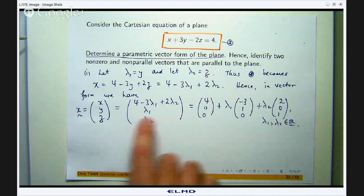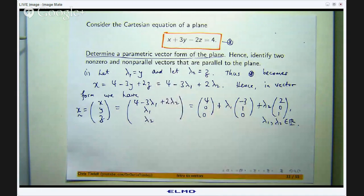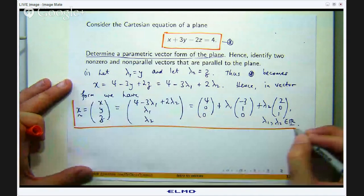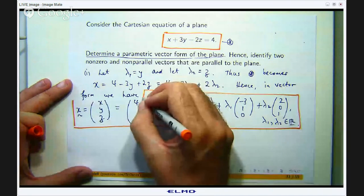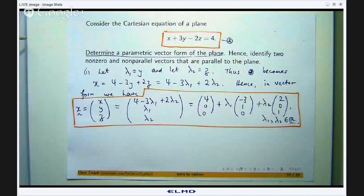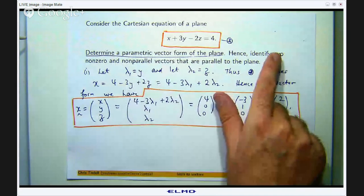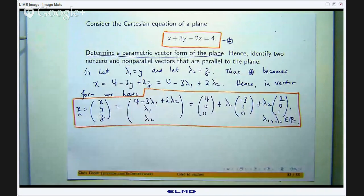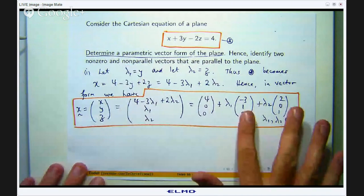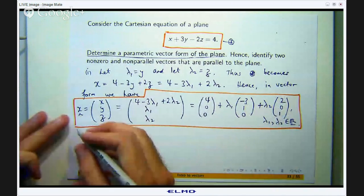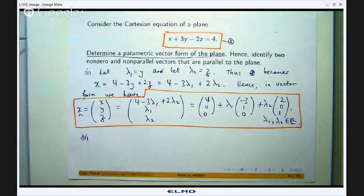That is a parametric vector form for our given plane. Now we have sort of already done the second part, identified two non-zero and non-parallel vectors that are parallel to the plane. We want to pull out that vector and that vector. But let us just write it down anyway.